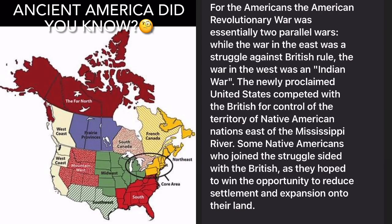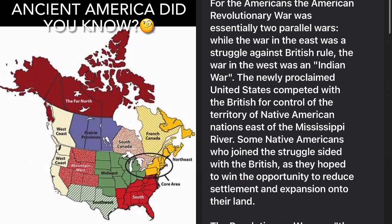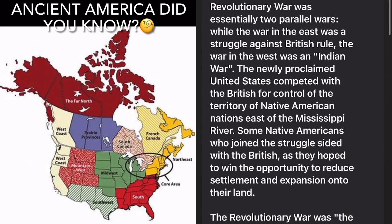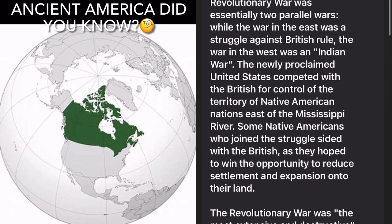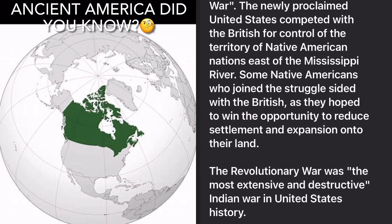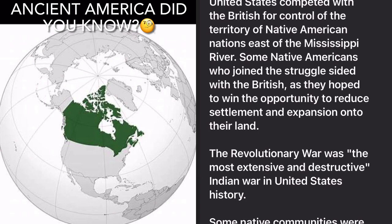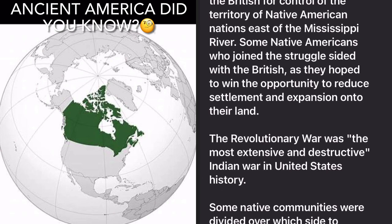For the Americans, the American Revolutionary War was essentially two parallel wars. While the war in the east was a struggle against British rule, the war in the west was an Indian war. The newly proclaimed United States competed with the British for control of the territory of Native American nations east of the Mississippi River. Some Native Americans who joined the struggle sided with the British, as they hoped to win the opportunity to reduce settlement and expansion onto their land. The Revolutionary War was the most extensive and destructive Indian war in United States history.